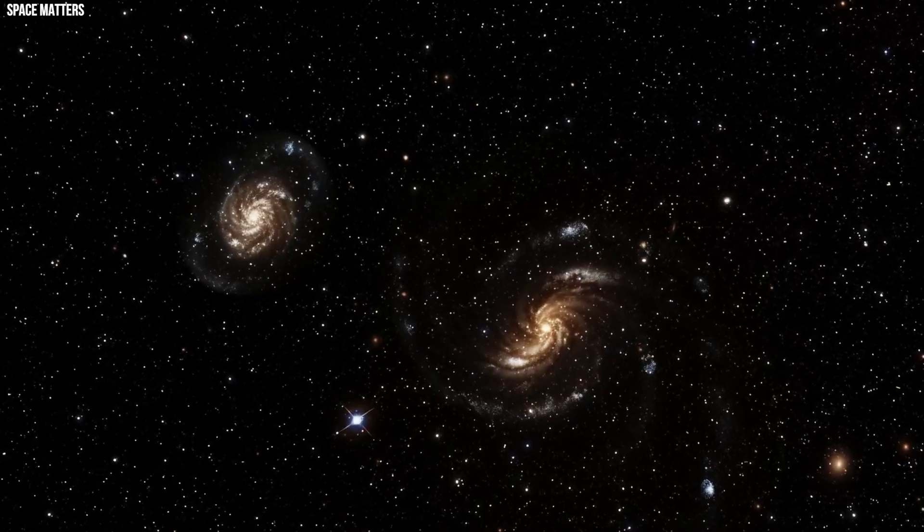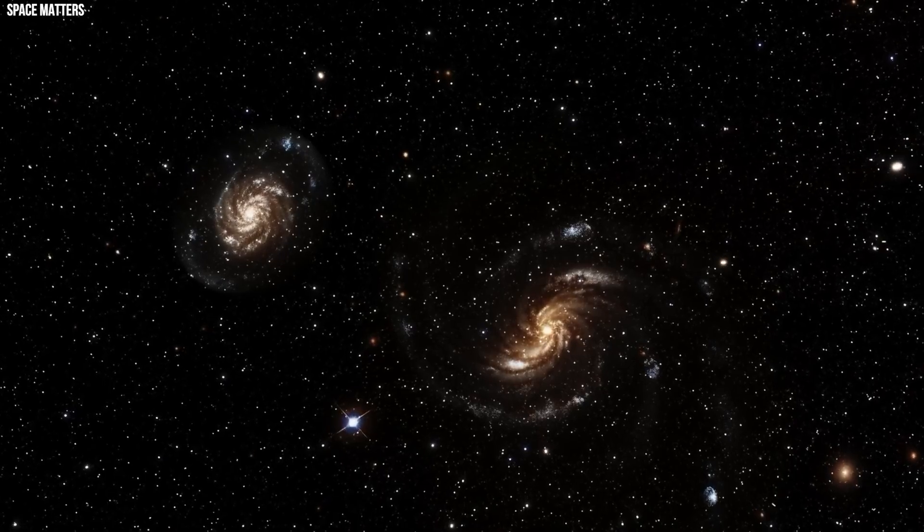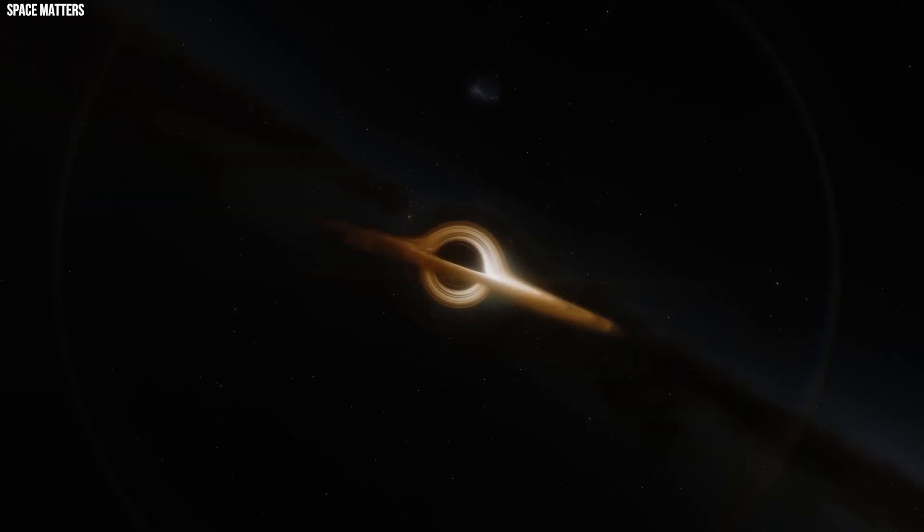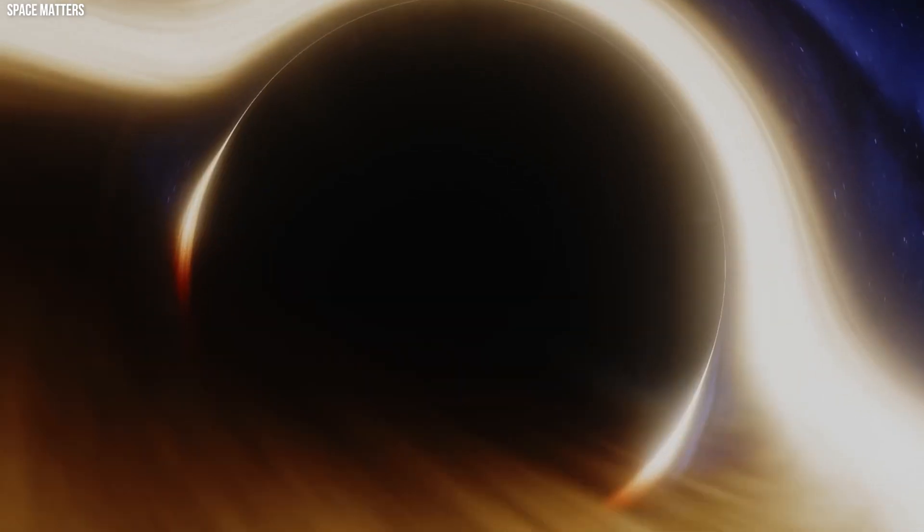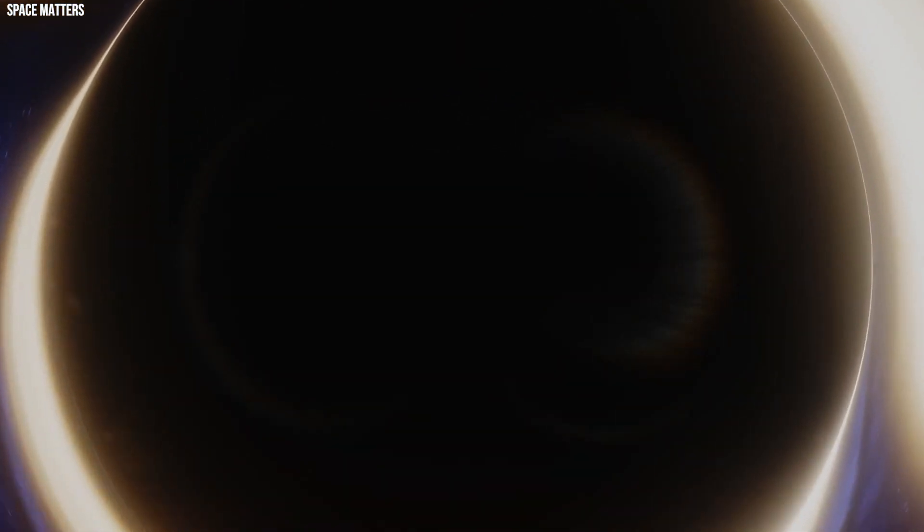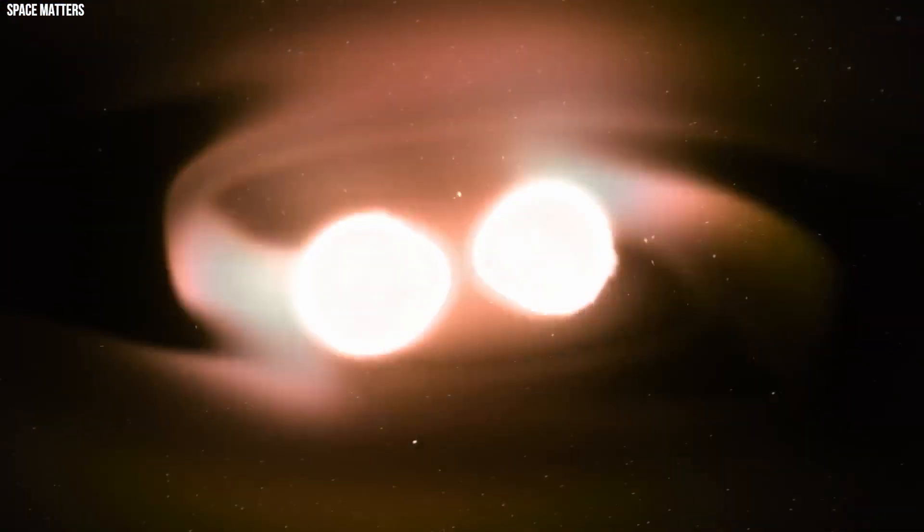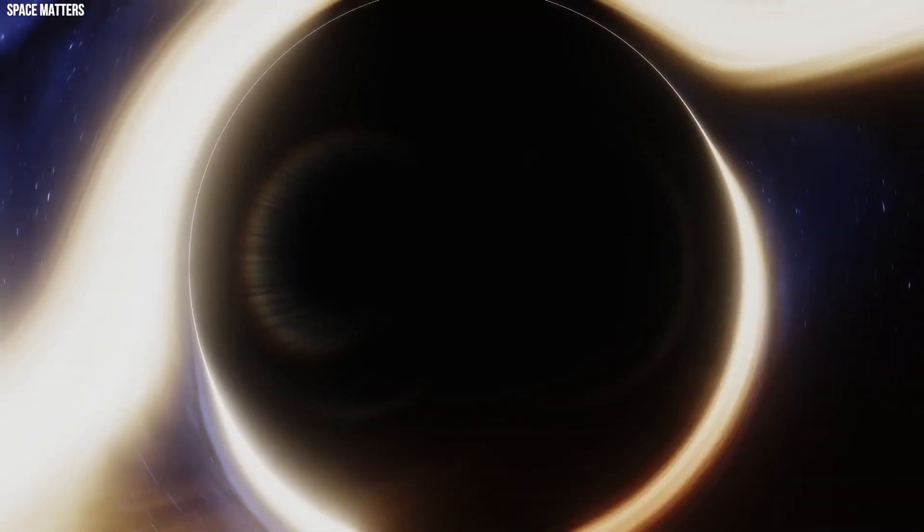Black holes, formed by the gravitational collapse of massive stars, possess incredibly dense and compact cores known as singularities. These singularities are shrouded by the event horizon, a boundary beyond which nothing, not even light, can escape.